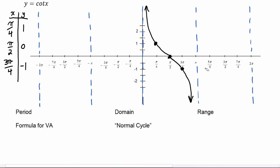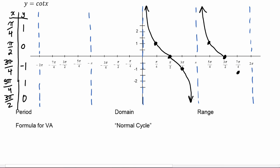We know cotangent of five pi over four is equal to one, cotangent of three pi over two is equal to zero, and cotangent of seven pi over four is negative one, so we can see it's already repeating itself. Now we can go ahead and fill in the rest of the graph. Cotangent of negative three pi over four is one; at negative pi over two it's zero, and at negative pi over four it's negative one. We can fit one more cycle: at negative seven pi over four it's one, at negative three pi over two it's zero, and at negative five pi over four it's negative one.